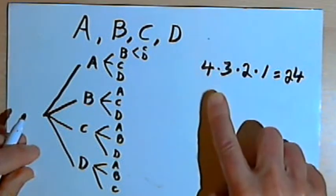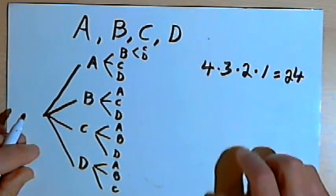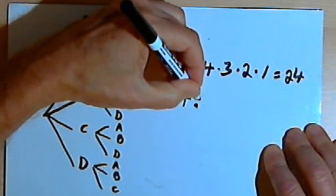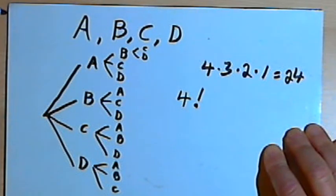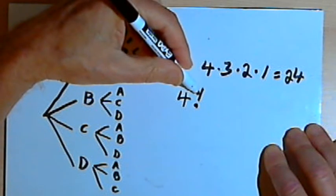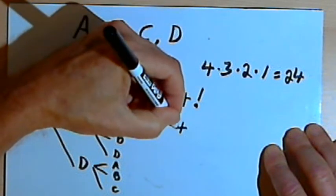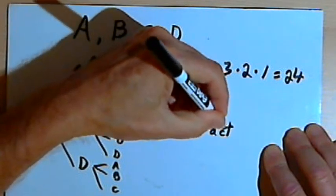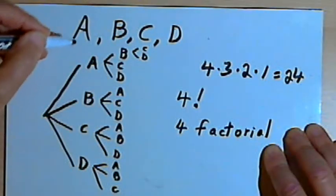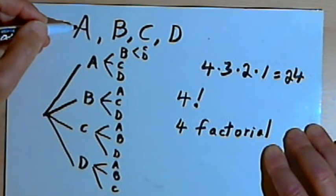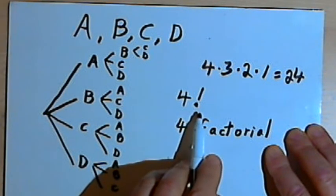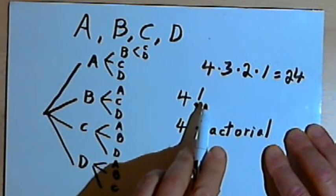Now, there's a mathematical symbol we can use that will speed this up. I can say that there are four and an exclamation point after it, which is read as four factorial, four factorial ways of arranging all four of the objects in that four-object set. The factorial sign, this exclamation point, means this.